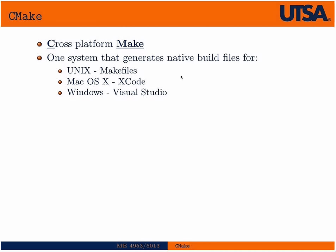CMake does stand for cross-platform make, meaning that you have one CMake build system that can, with one set of source code, generate Unix makefiles, Xcode files. On a Mac operating system — Macs are Unix machines as well — you may just choose to use the Unix makefiles themselves. And on a Windows machine, you can generate a Visual Studio project from the same CMake build configuration.